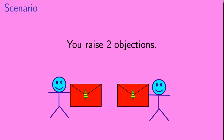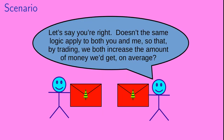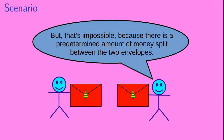In response to this you raise two objections. Here's your first objection: okay, so let's say you're right — doesn't the same logic apply to both you and me, so that by trading we both increase the amount of money we'd get on average? But that's impossible because there is a predetermined amount of money split between the two envelopes.